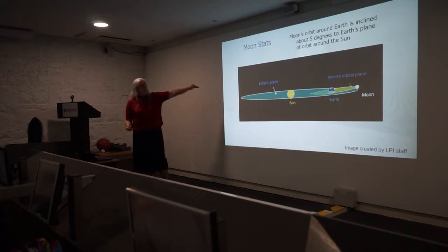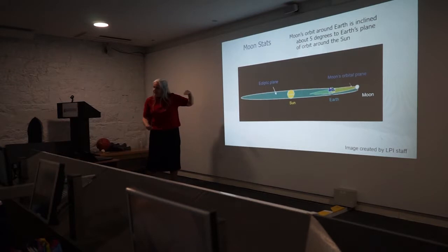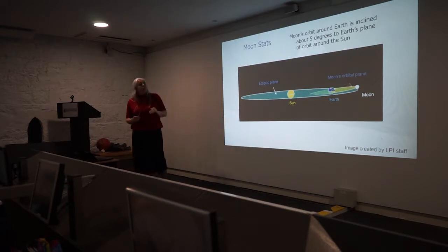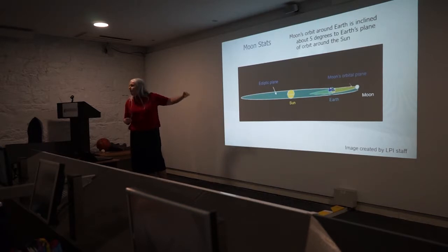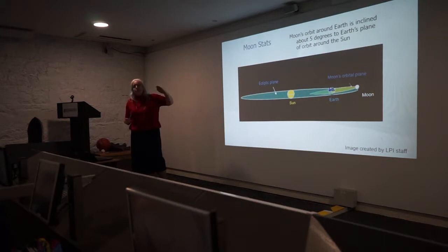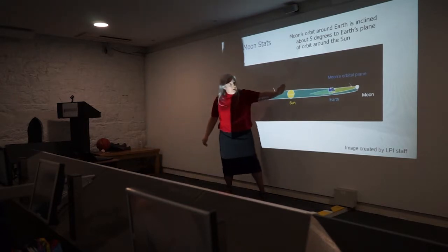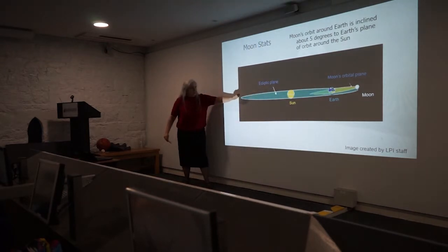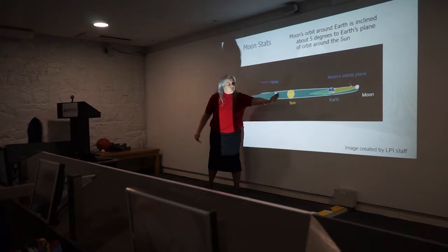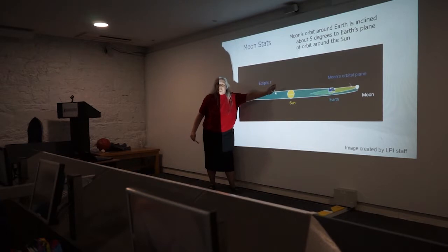Eclipses refer to the ecliptic — notice the names are the same. You get an eclipse when the moon's orbital plane is in the ecliptic plane. Eclipses only happen a couple of times a year because the moon's orbital plane keeps its tilt as the Earth and moon move around the sun. Whether we're on this side or that side, we're always tilted at that same angle.